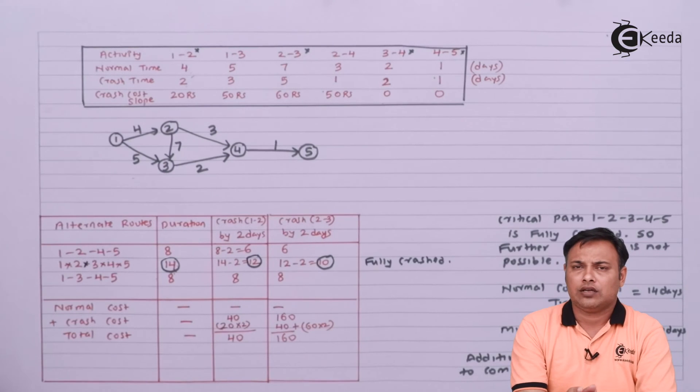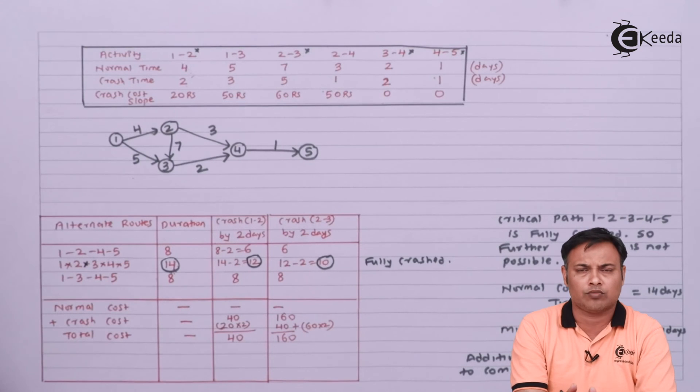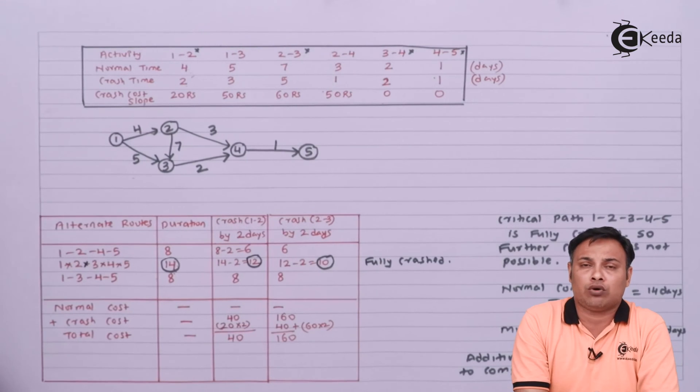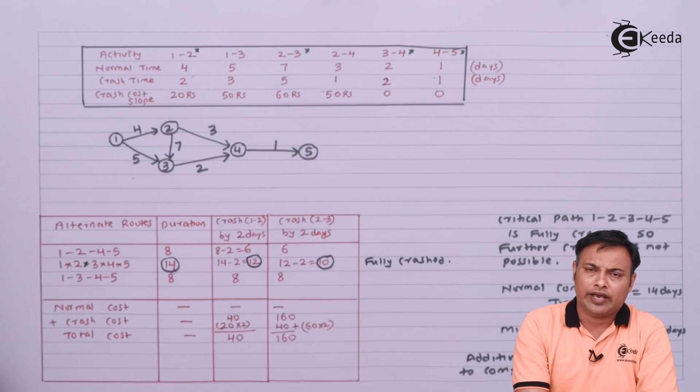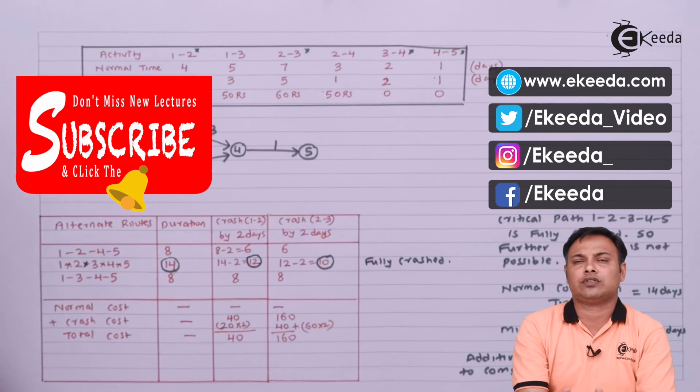So friends, this was all about crashing. Crashing is something that we will learn at a later stage when we solve more problems or examples based on this. These are only the basic two examples just to explain how to work out the crashing. And this was the case when there was no overhead cost involved. So you can keep on crashing and after every stage your cost will increase rather than decrease because there is no savings in overhead cost. Thanks for watching this video. Do subscribe to our channel Ikeda.